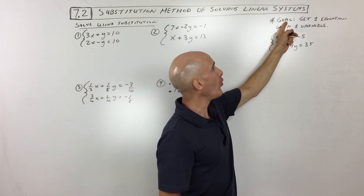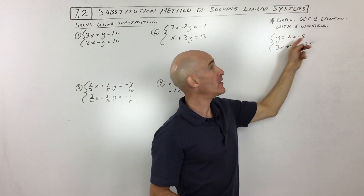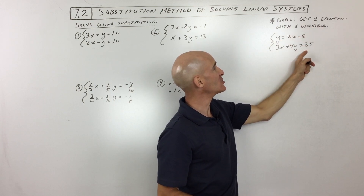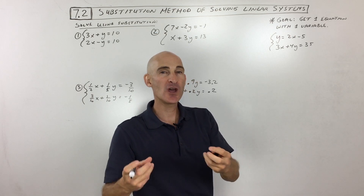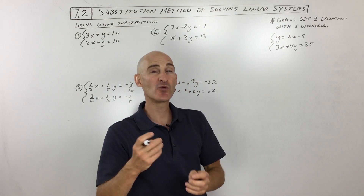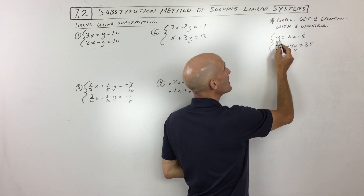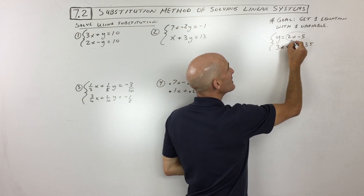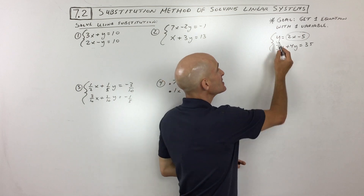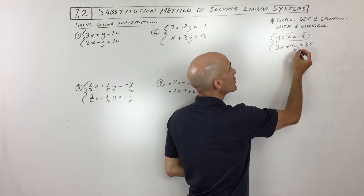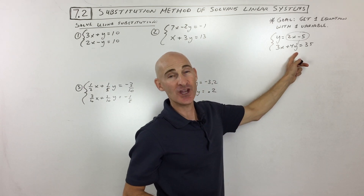Our goal is to end up with one equation with just one variable, but if you notice, we're starting with two equations that have two variables. So how do we go from two equations with two variables down to one equation with one variable? I'm going to show you an example, and this is where the substitution comes in. See how y equals 2x minus 5? Since y equals this whole quantity, let's put that in place of y in the other equation.